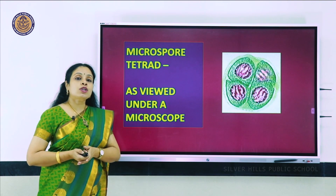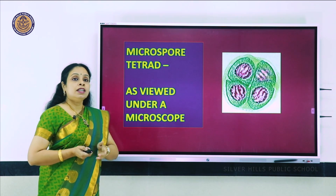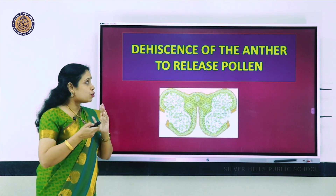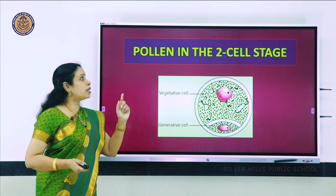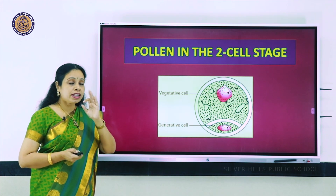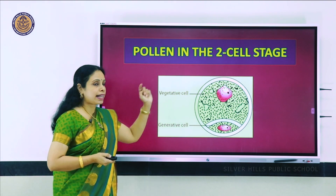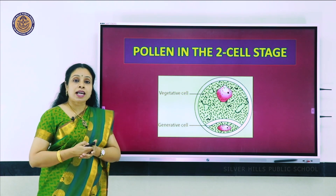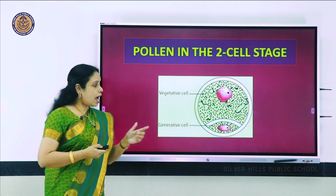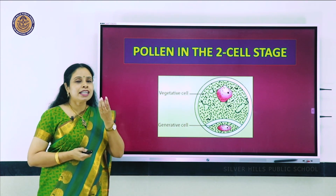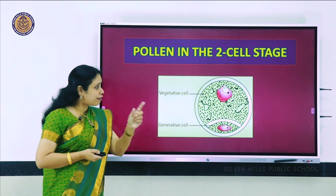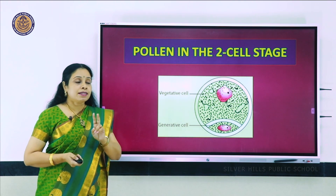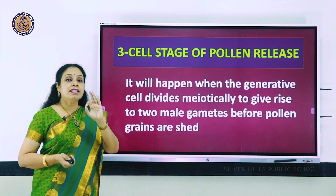You can see the microscopic view of a tetrad of pollen grains. By the time the anther becomes dry, it will burst and the pollen grains can be released in the two-celled or three-celled stage. In the two-celled stage, there is an upper vegetative cell - bigger, with more cytoplasm and an irregularly shaped nucleus - and a lower generative cell with very little cytoplasm and a small nucleus. If the nucleus of the generative cell divides to form two male gametes, the pollen is released in the three-celled stage.